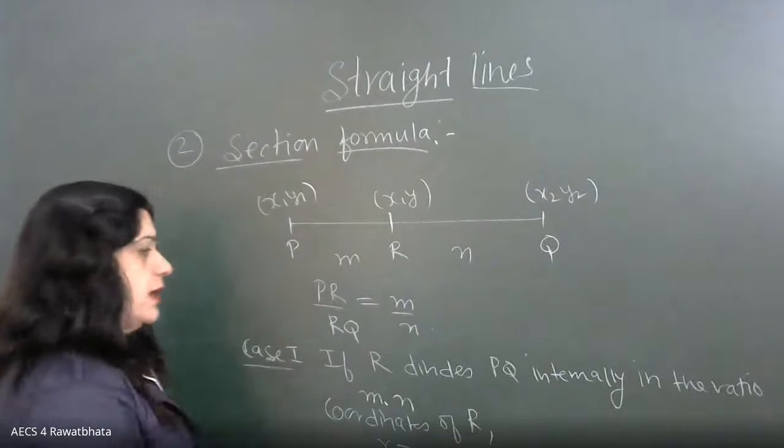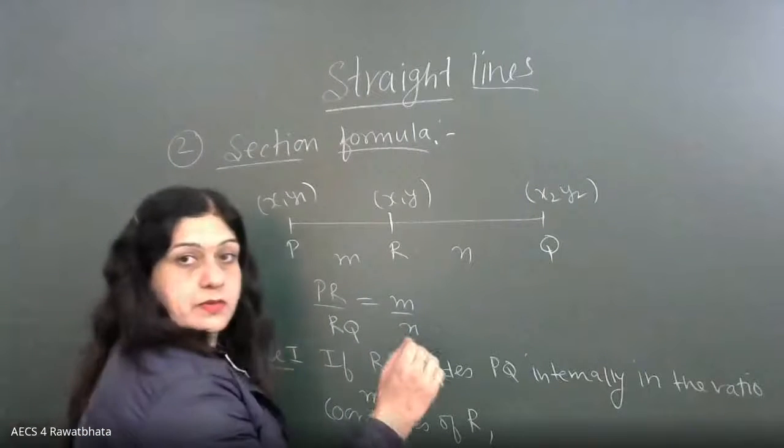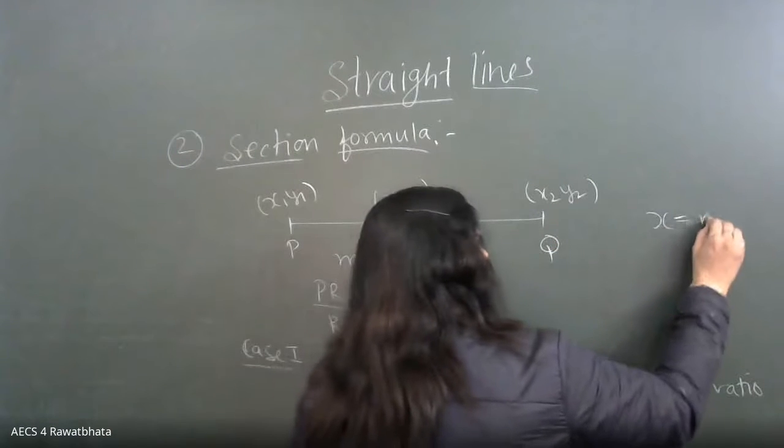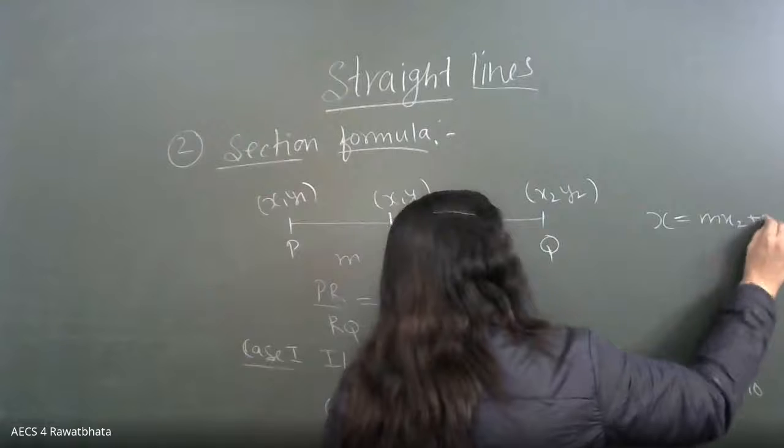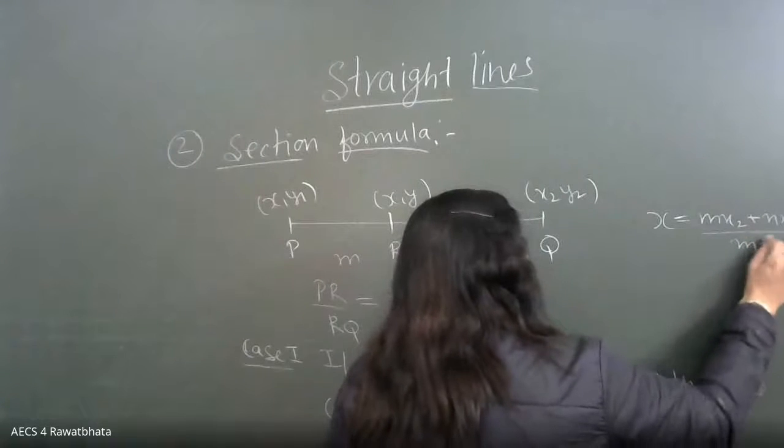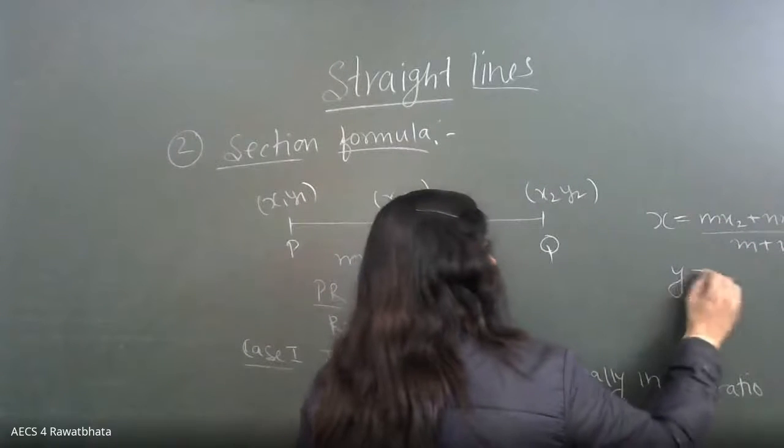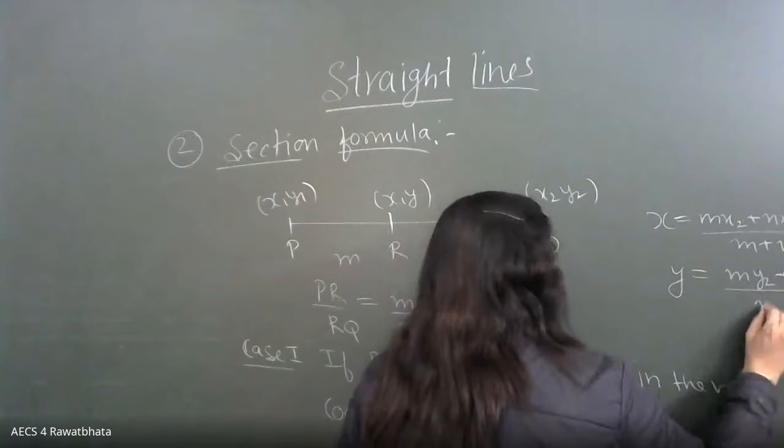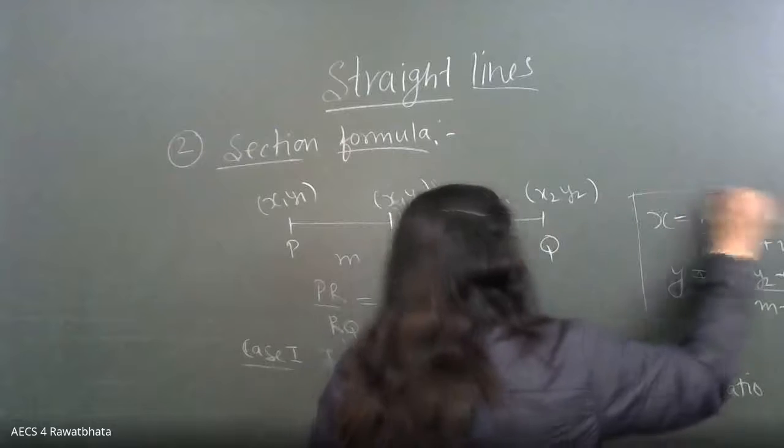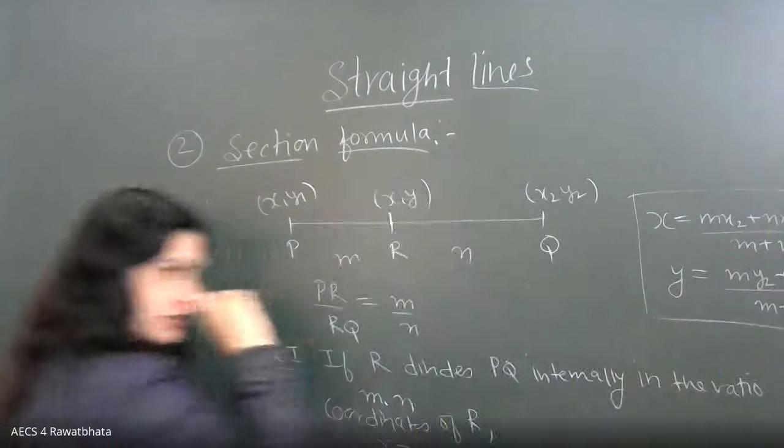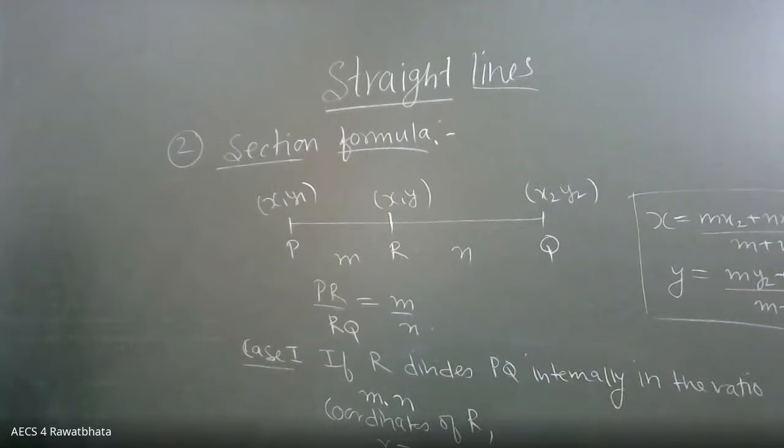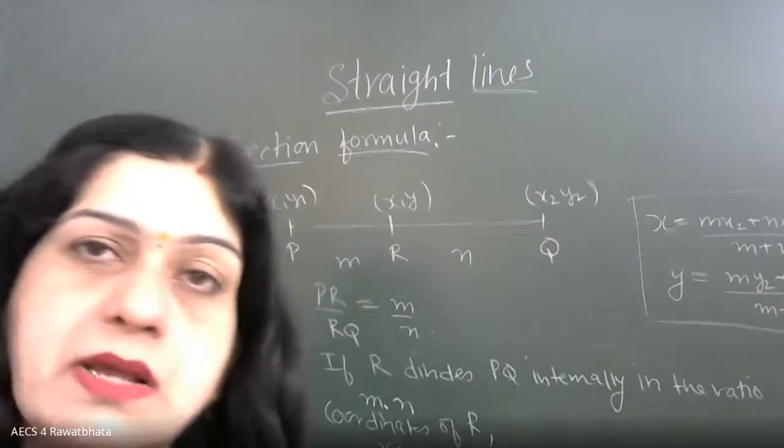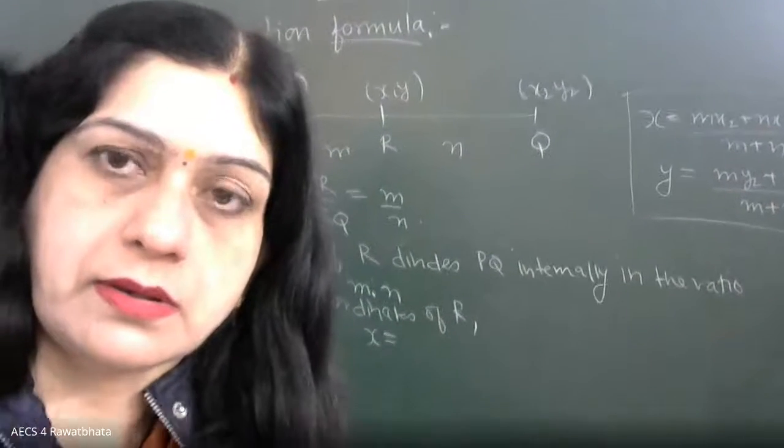So I will be writing here, X is going to be MX2 plus NX1 upon M plus N, and Y is going to be MY2 plus NY1 upon M plus N. So these are the coordinates of this point R if it is dividing it internally in the ratio of M is to N.